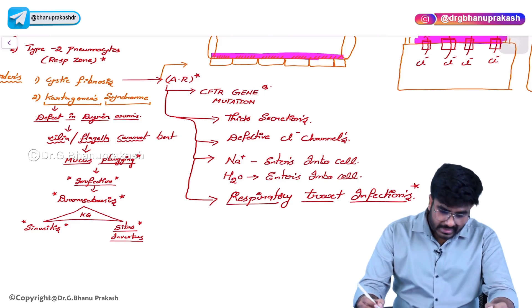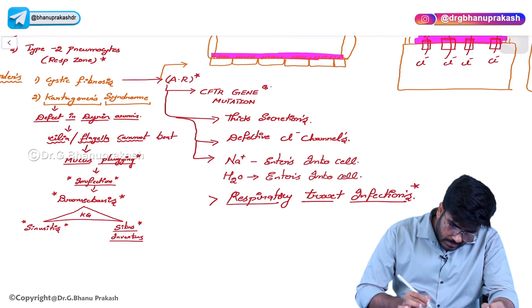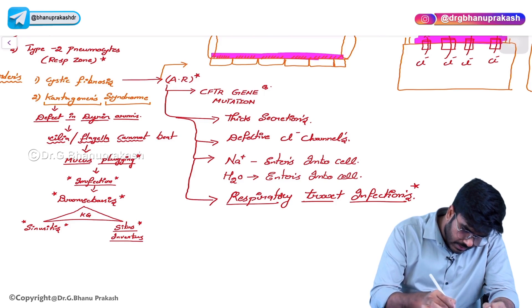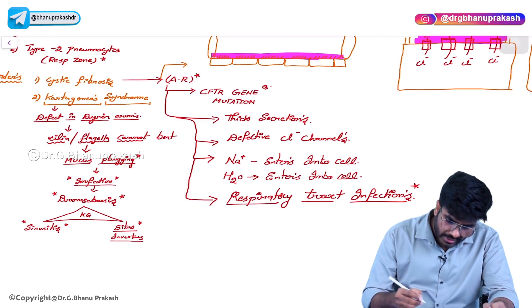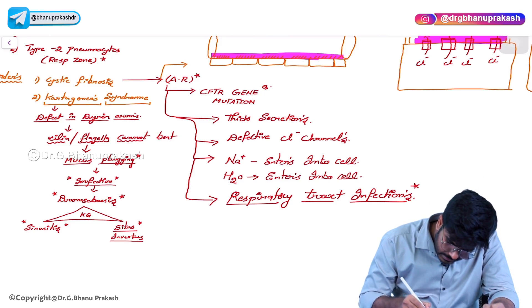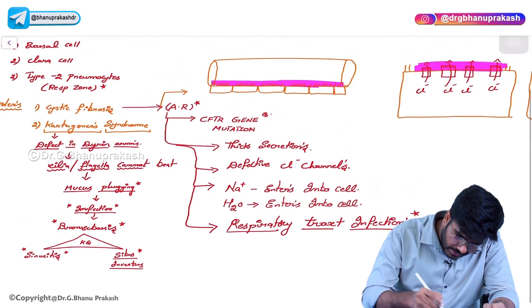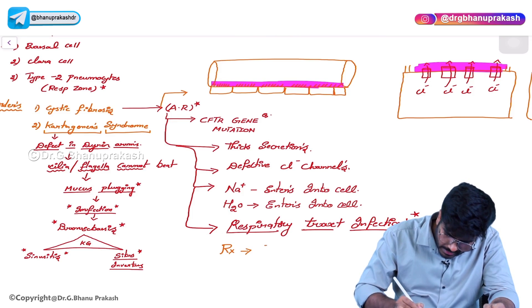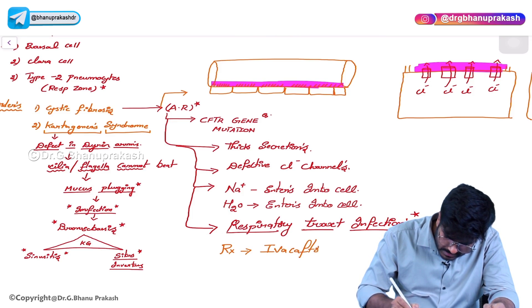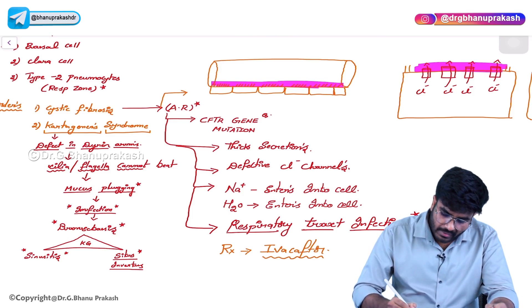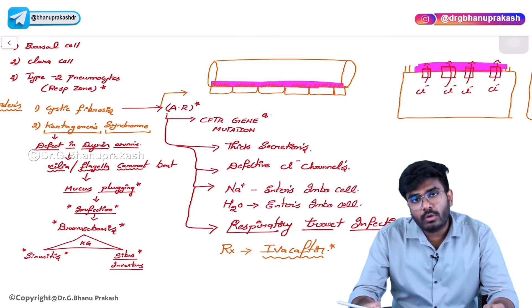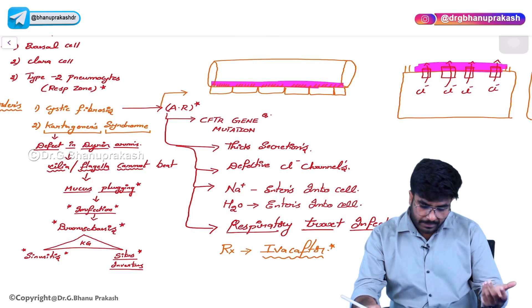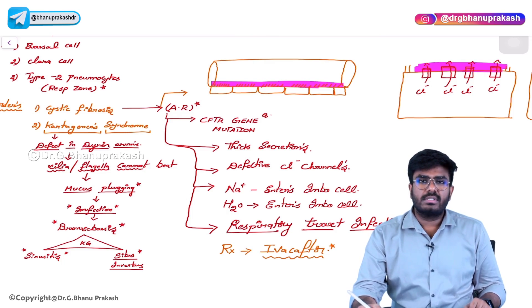How to treat this condition? You have to treat it by opening the chloride channels. The treatment is done with a drug which opens the chloride channels - the name of the drug is ivacaftor. Ivacaftor is a drug which will open the chloride channels and helps in treating cystic fibrosis.